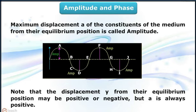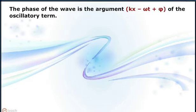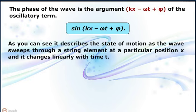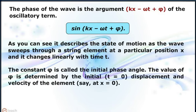The phase of the wave is the argument (kx - ωt + φ) of the oscillatory term sin(kx - ωt + φ). It describes the state of motion as the wave sweeps through a string element at a particular position x, and it changes linearly with time t.